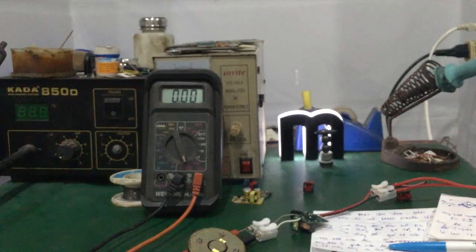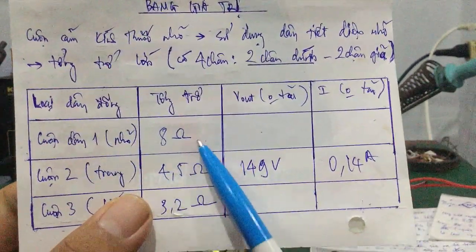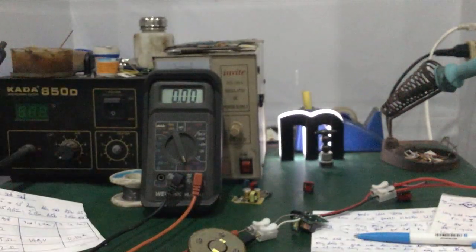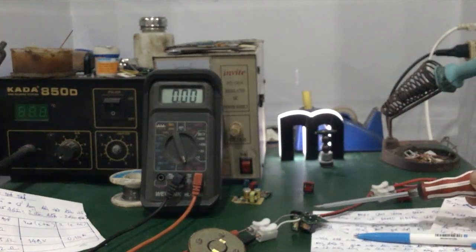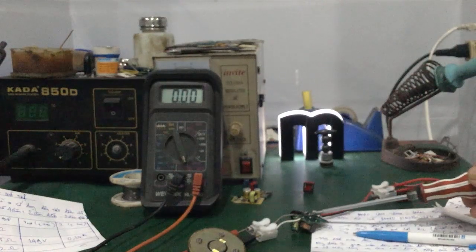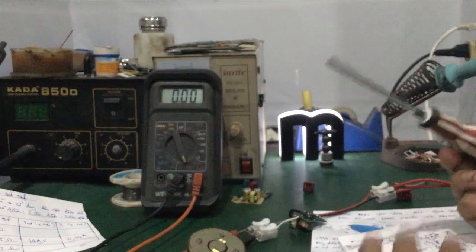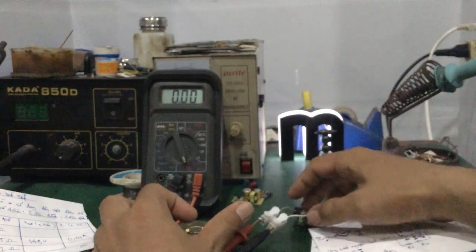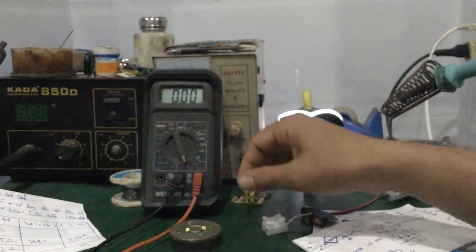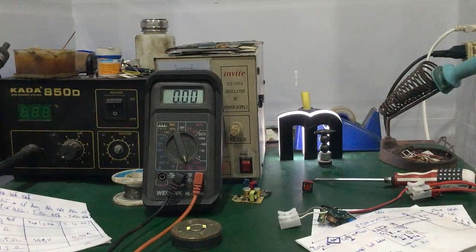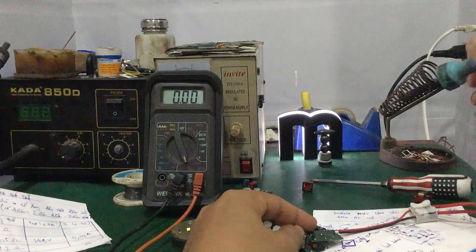Mình sẽ thay đổi giá trị cuộn dây - đo điện áp ngõ ra. Thứ nhất thay bằng cuộn dây có tổng trở 8 Ohm, cuộn dây nhỏ. Sau khi làm xong các bạn nhớ xả điện tụ nha - dùng tua vít chạm 2 đầu tụ để xả, nó sẽ phóng lửa điện. Nếu không chú ý mà chạm vào sẽ bị giật. Mình tiến hành tháo cuộn dây cũ ra và thay bằng cuộn dây tổng trở 8 Ohm, cuộn nhỏ.